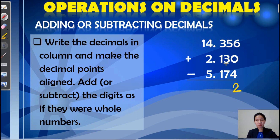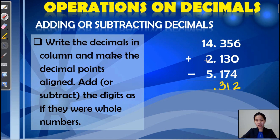5 plus 3 is 8, minus 7 is 1. 3 plus 1 is 4, minus 1 is 3. Then we copy the decimal point. Next, we have 4 plus 2 is 6, minus 5 is 1. Next, we'll just simply bring down 1 since there are no other values to be added or subtracted. So here the answer is 11.312, or 11 and 312 thousandths.